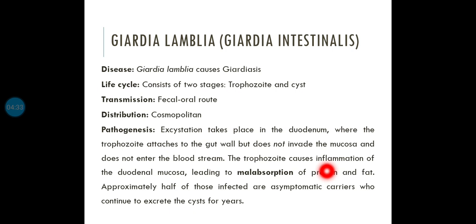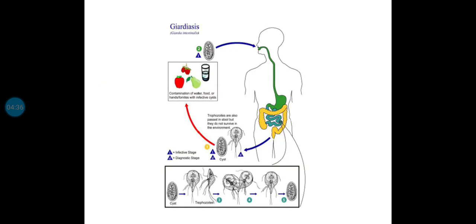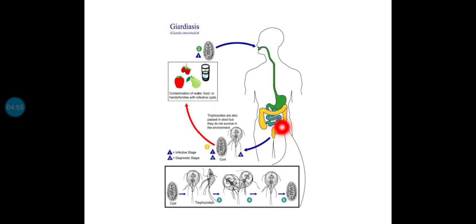The life cycle: the cyst is the infective stage, ingested through contaminated food or water. In the duodenum, the cyst converts to trophozoite, causing inflammation and malabsorption of protein and fats. Both cyst and trophozoite are diagnostic stages and can be examined in stool under the microscope.